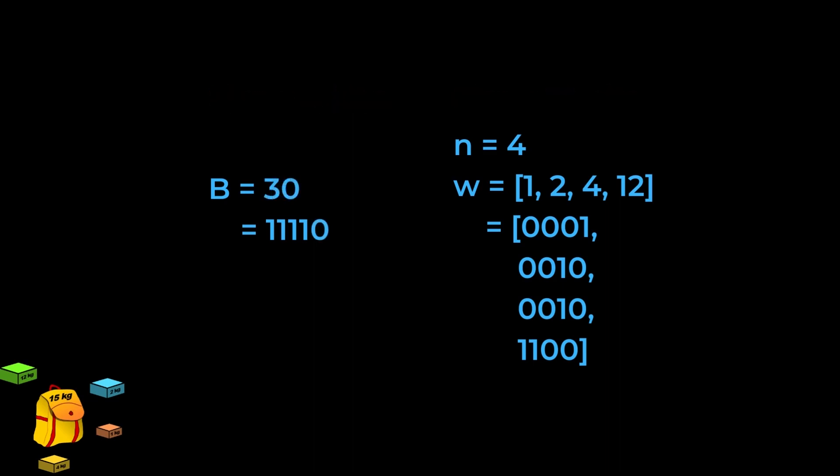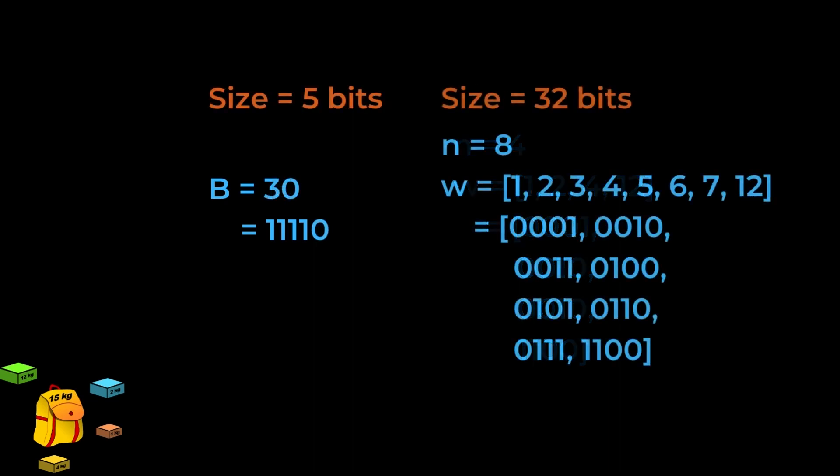B becomes 30, which is a 5-bit integer. W now has some extra items, and has become 32 bits long, exactly double the length of what it was before.